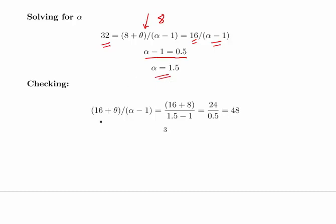You can just check it there with the other one. 16 plus theta, this is what should equal 48, this is the second one we're given, divided by alpha minus 1. 16 plus 8 divided by 1.5 minus 1. 24 divided by 0.5 is 48. So that checks out.